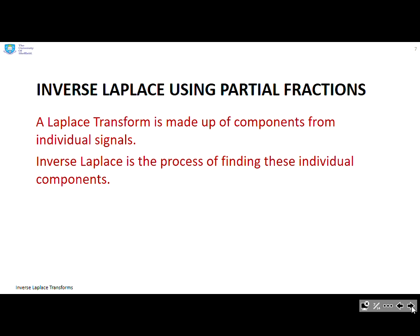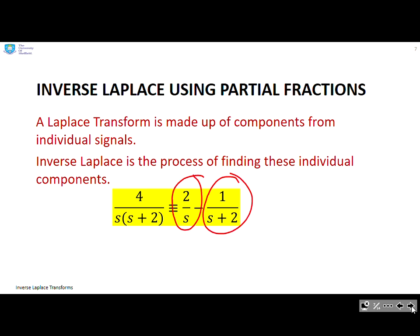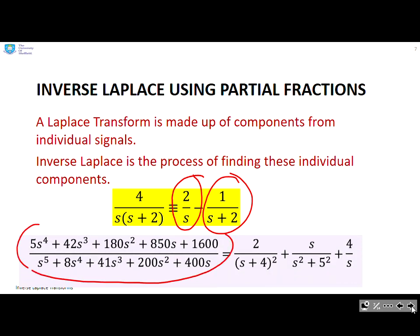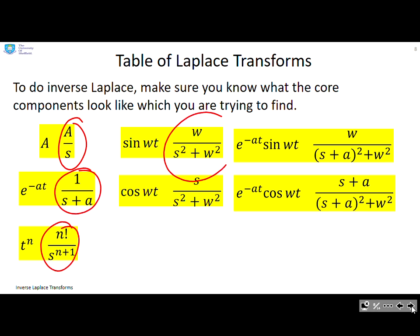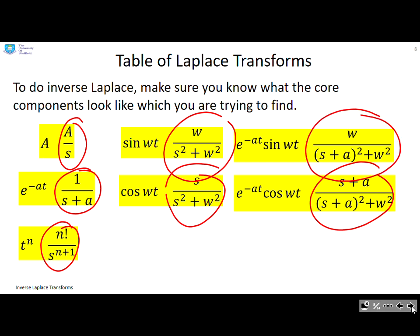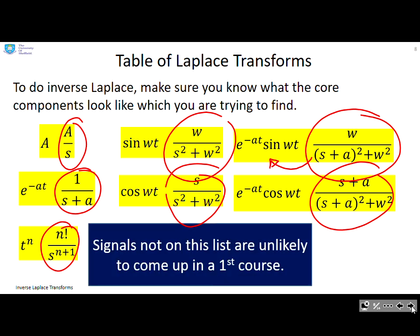Inverse Laplace using partial fractions: a Laplace transform is made up of components from individual signals, and inverse Laplace is the process of finding these individual components. For example, 4 over s(s + 2) can be broken into 2 over s and 1 over (s + 2). The first thing you need to do is make sure you're familiar with your table of Laplace transforms, because once you've identified one of those forms you can immediately identify the underlying time domain signal. Any signals not on the list are unlikely to come up in a first course.